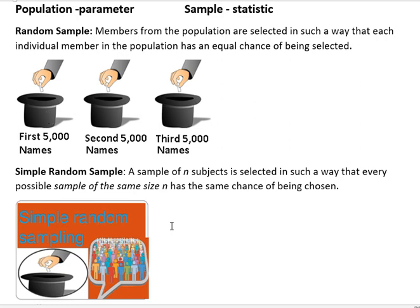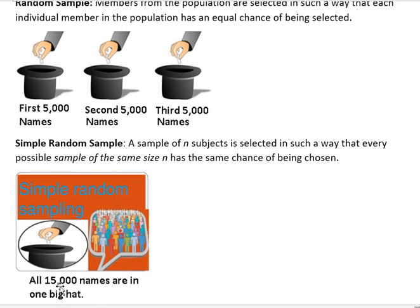But if you had a simple random sample, and you put all 15,000 names in one big hat, now you and your friends are all in there, and they're going to draw nine names out of that one big hat, and then those nine names, now you have a chance of all being, you and eight of your friends being selected. But that's not even possible up here in a random sample.